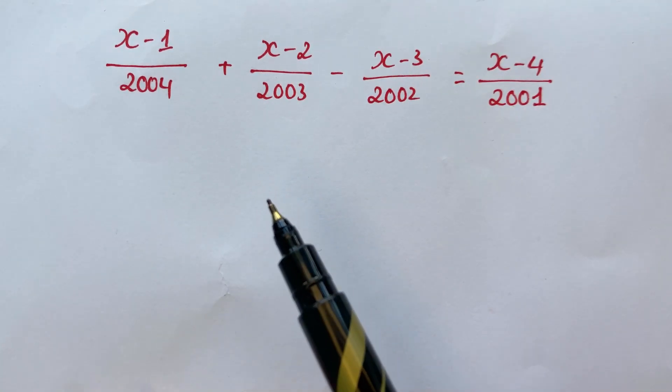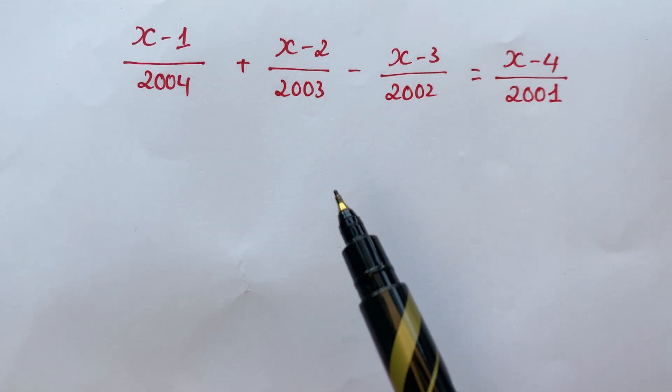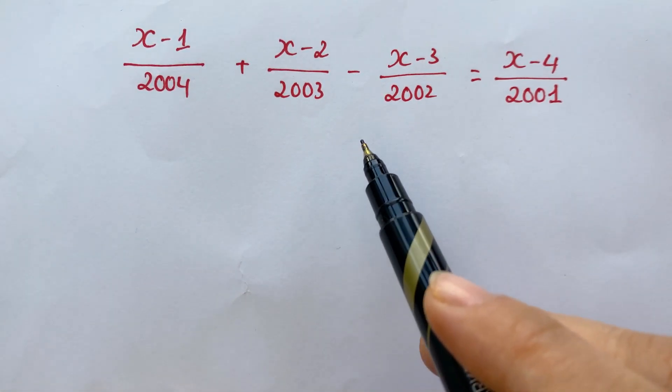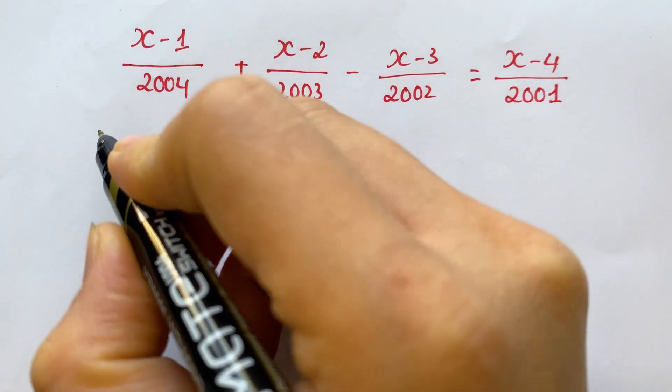So therefore, for the first step, you can minus 1 from both sides. Therefore,